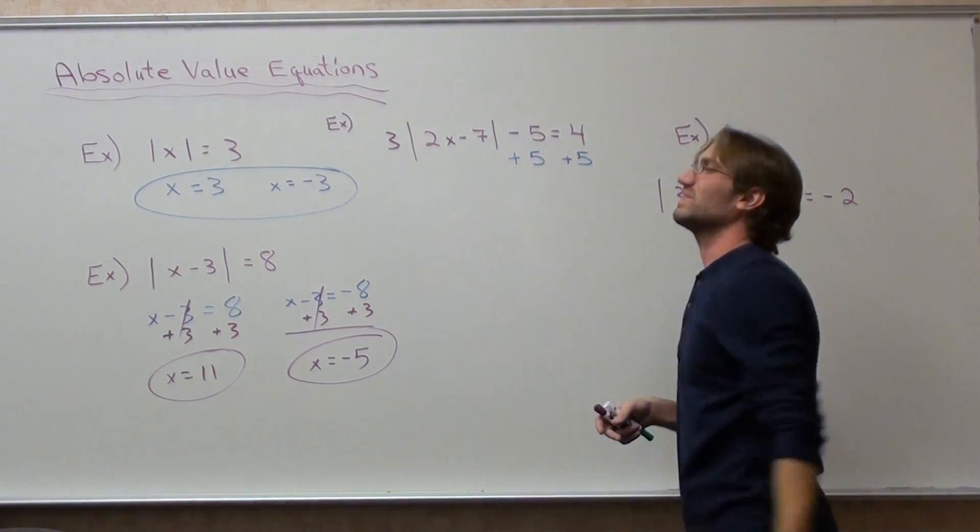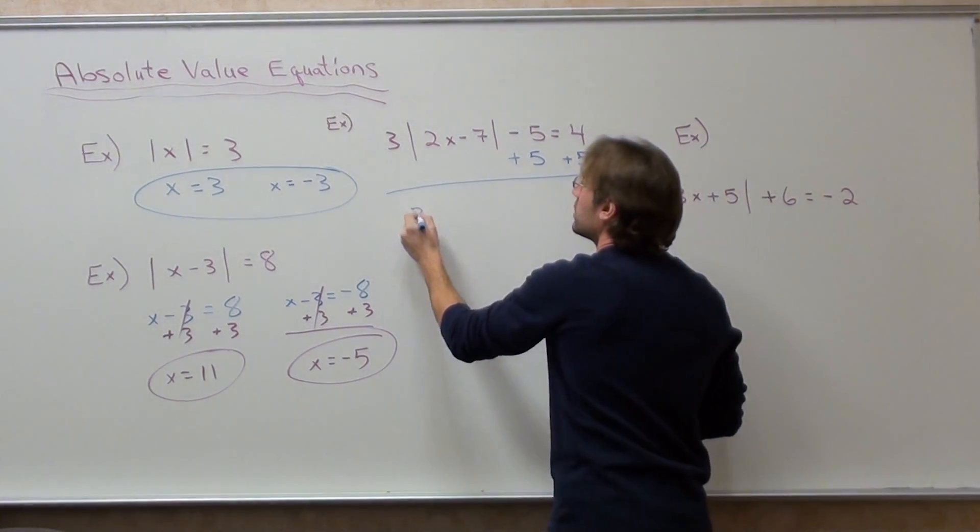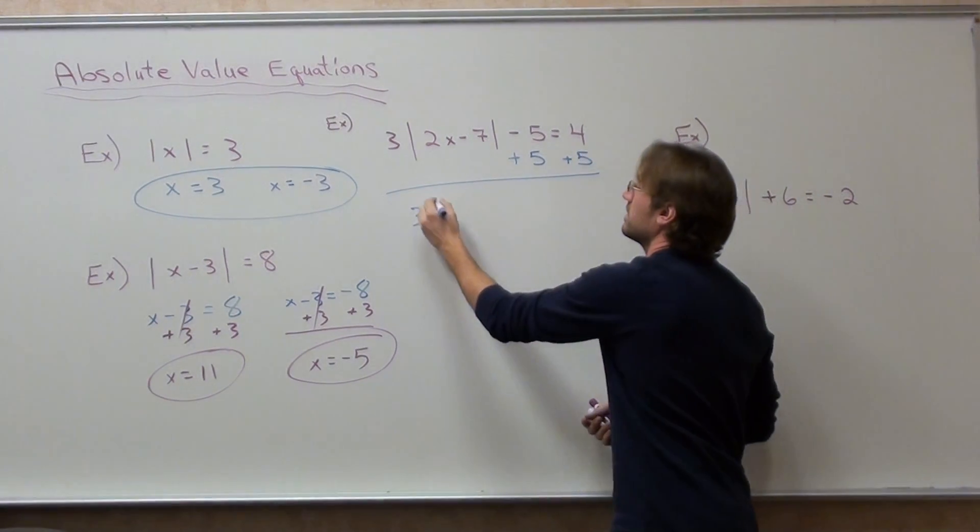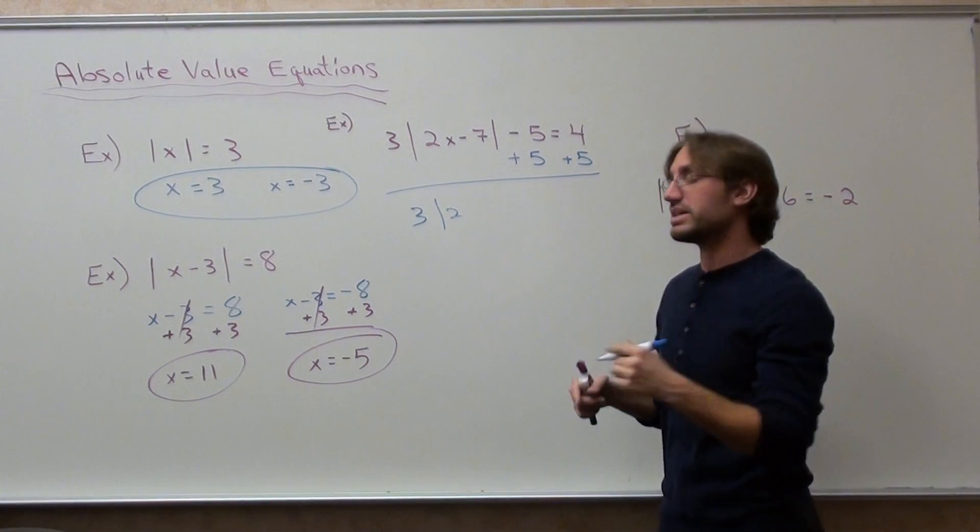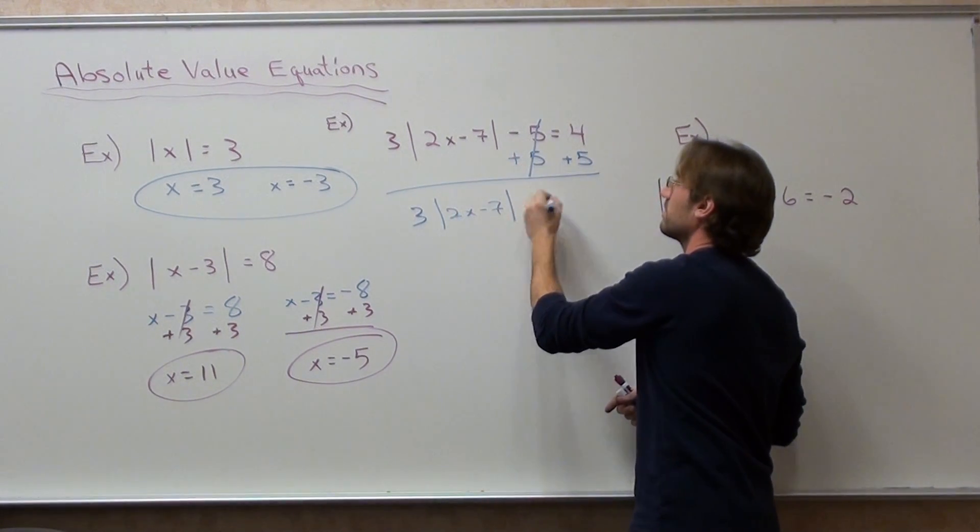I mean, I suppose you can divide by three. It's just much more difficult. Why would you make a problem difficult? So you get three times the absolute value of two x minus seven equals nine.